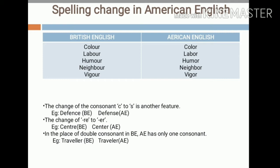Another spelling change is in the place of double consonants. In British English, American English has only one consonant. For example, the word 'traveller' — in British English the spelling is T-R-A-V-E-L-L-E-R, whereas in American English only one L is used: T-R-A-V-E-L-E-R. These are the spelling changes seen in American English compared to British English.